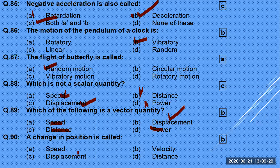Change in position in a particular direction is called velocity. The rate of change of position is basically velocity. Change in position is called displacement — not distance. So displacement is the correct answer for 'change in position.'